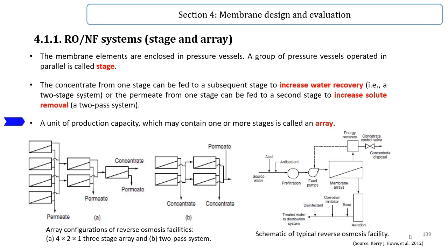A unit of production capacity which may contain one or more stages is called an array. In this figure, you can see a three-stage array as well as a two-pass system.